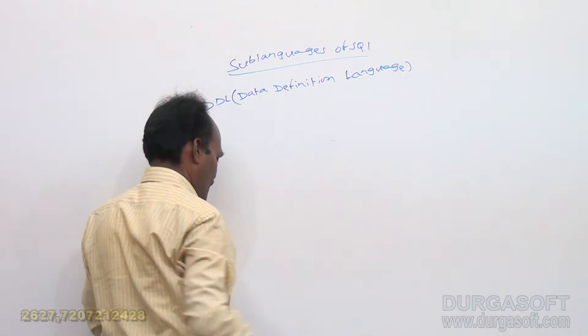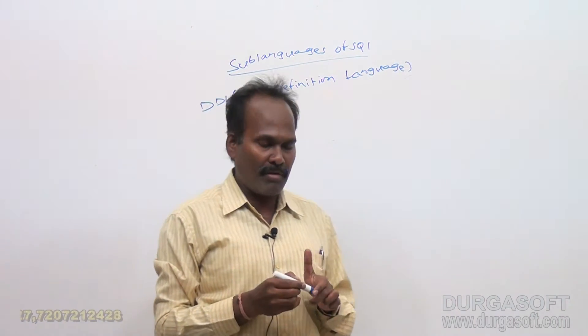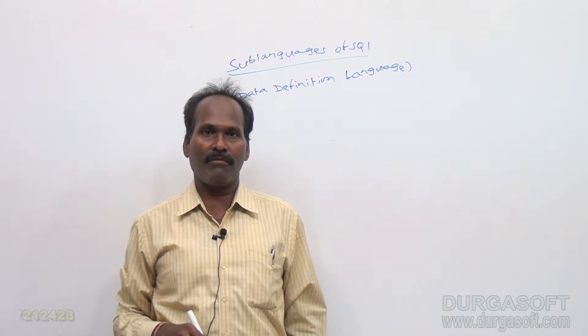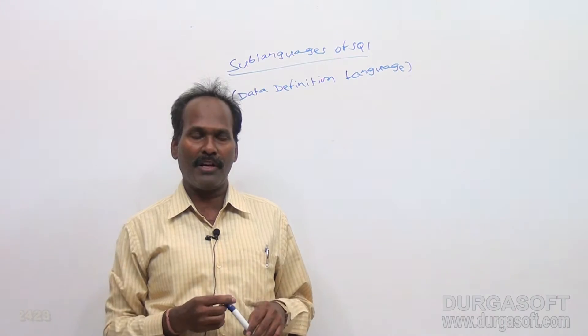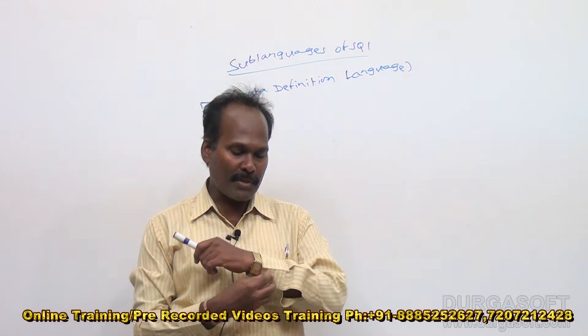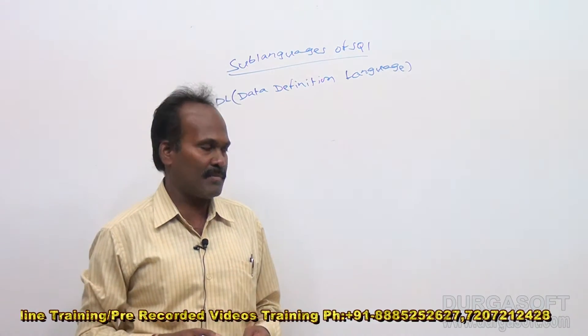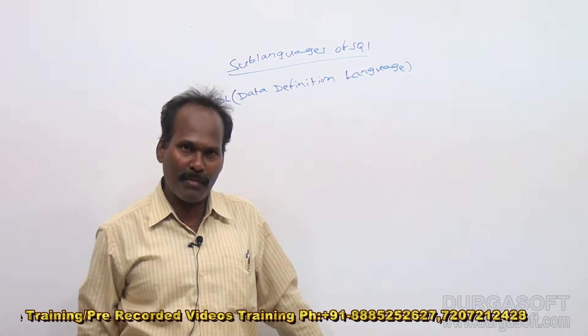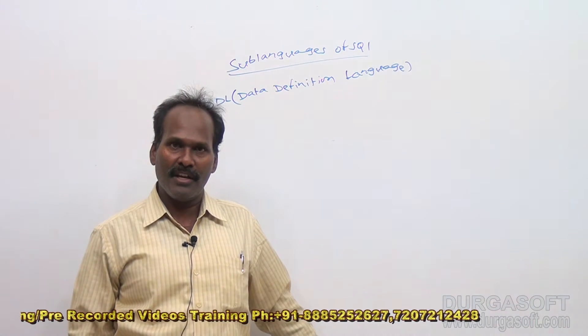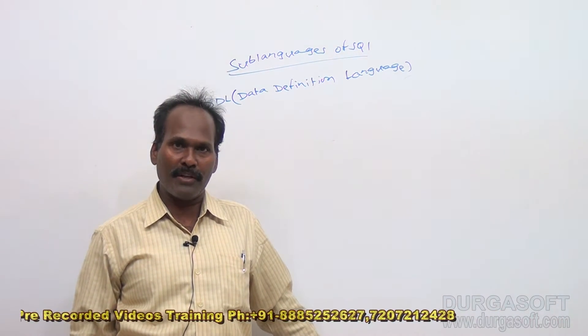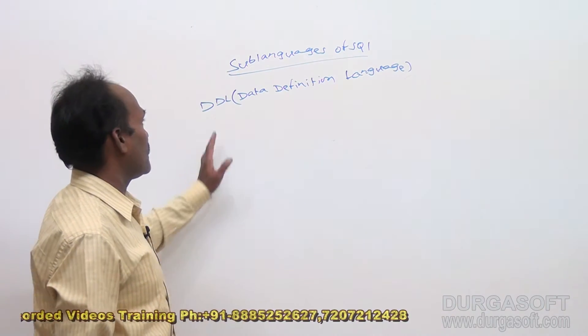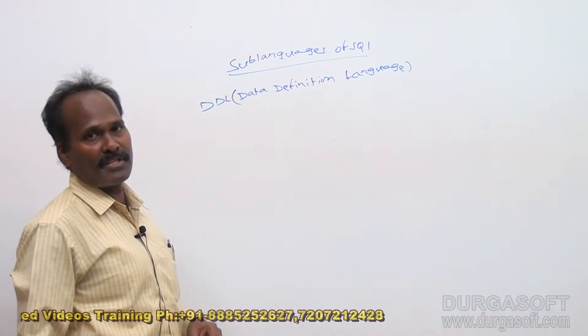Yesterday in the last session we have discussed how to connect to database server. Once connecting to database server is over, the next task is to create the structure, structure of the database object. What is the database object actually? A database object can be a table or a synonym, a sequence, an index, a view. In order to create a database object, we must use DDL data definition language commands.